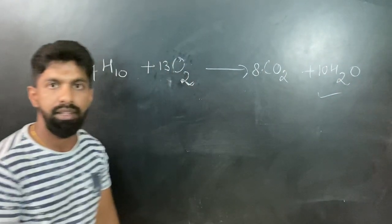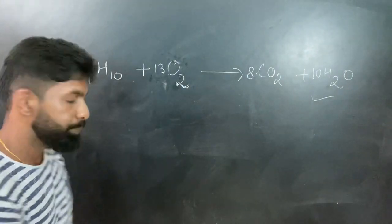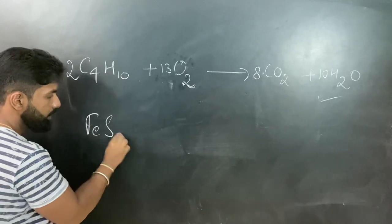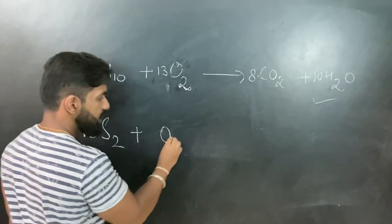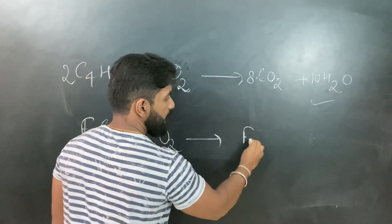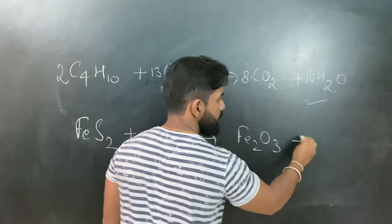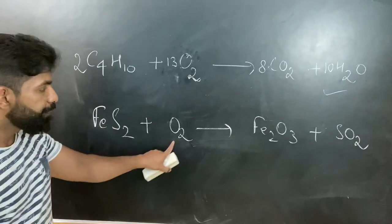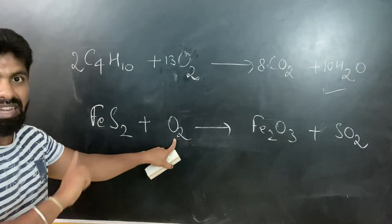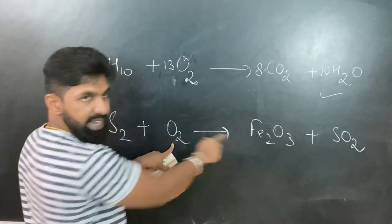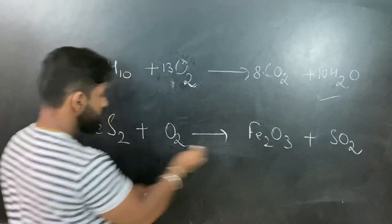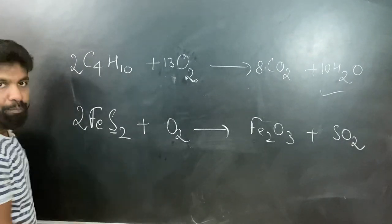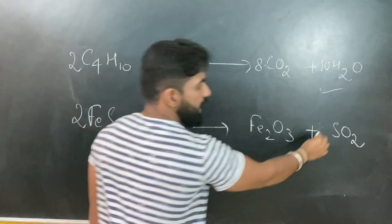I'll explain one more example. Let's say FeS2 plus O2 gives Fe2O3 plus SO2. Now what's the trick? Forget about the individual element and balance everything else. We can see iron - Fe - there is a 2 here so I need to write a 2 here so that iron gets balanced. Now 2 into 2 sulfur became 4, so blindly put a 4 here. Sulfur got balanced.